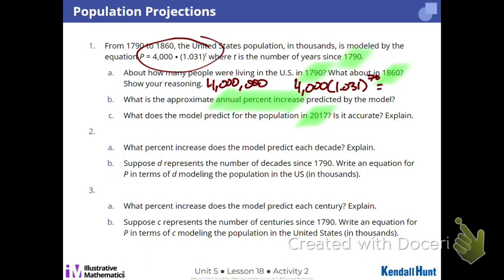I'm going to do 4,000 times 1.031 to the 70th. And I get this answer, 33897.4135. But I need to go three decimals, or three to the right. So 33897.413. 33 and a half people? You can't have half people.